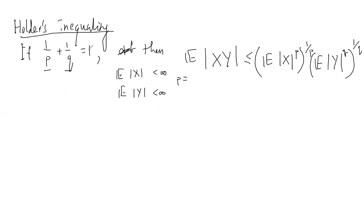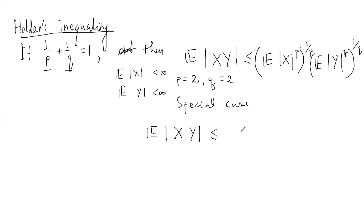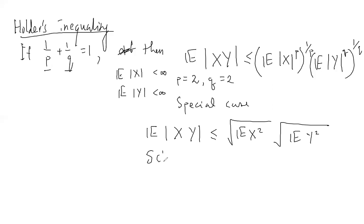A special case: setting p = q = 2 (since 1/2 + 1/2 = 1) gives E[|XY|] ≤ sqrt(E[X²]) * sqrt(E[Y²]). This is the Cauchy-Schwarz inequality. Since the exponents are 2, you can remove the absolute signs under the square roots.